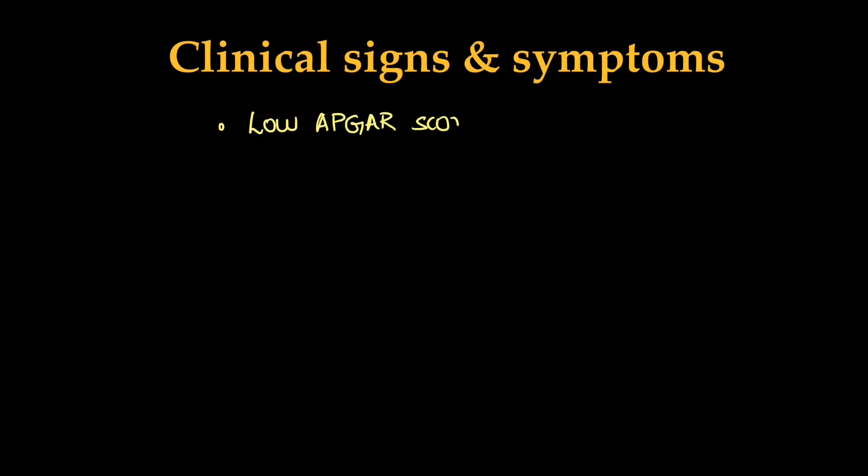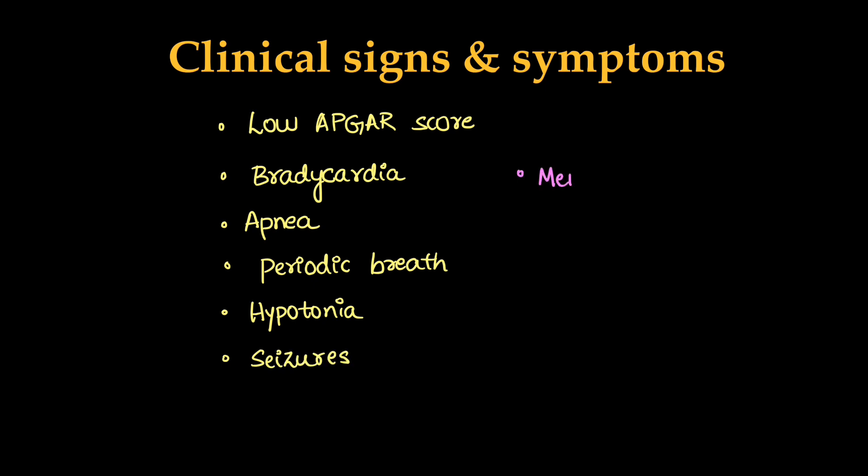Child will present with low Apgar score as soon as it is born, then bradycardia, apnea, periodic breathing, hypotonia, seizures, and later this will progress to mental retardation or cerebral palsy.